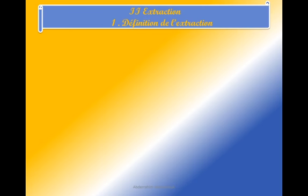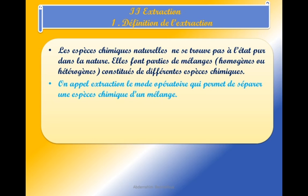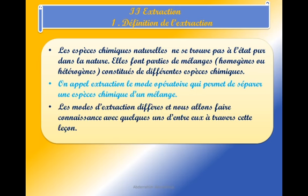Qu'est-ce que l'extraction ? Définition de l'extraction : Les espèces chimiques naturelles ne se trouvent pas à l'état pur dans la nature. Elles font partie de mélanges homogènes ou hétérogènes. On appelle extraction le mode opératoire qui permet de séparer une espèce chimique d'un mélange. Les modes d'extraction diffèrent et nous allons en voir quelques-uns.